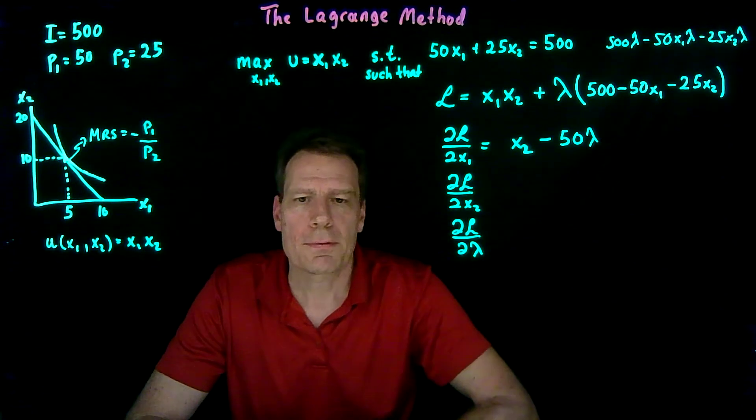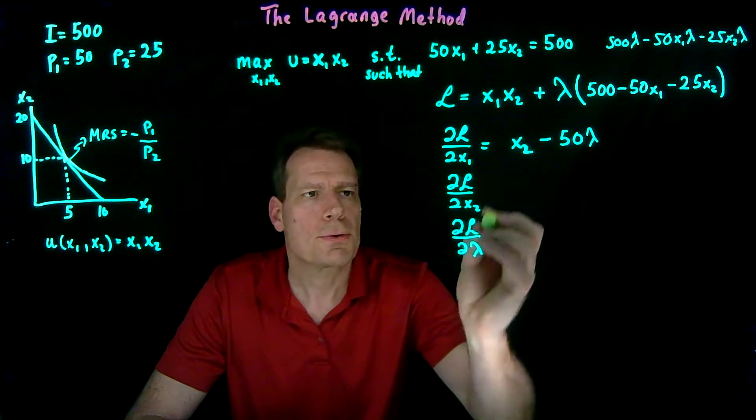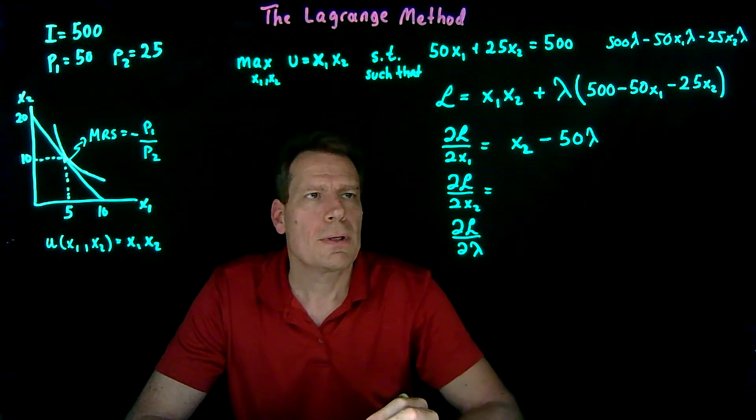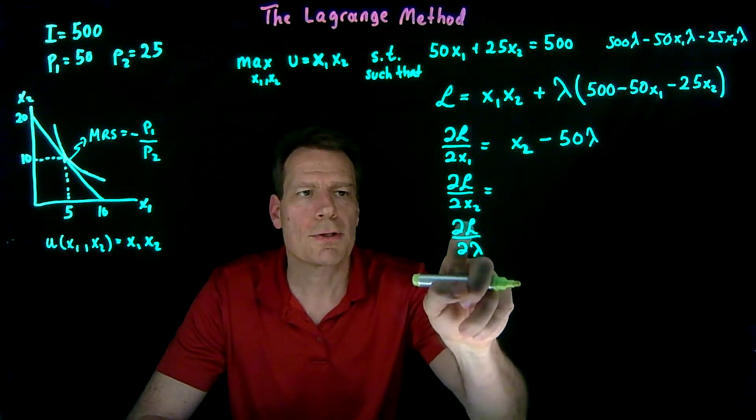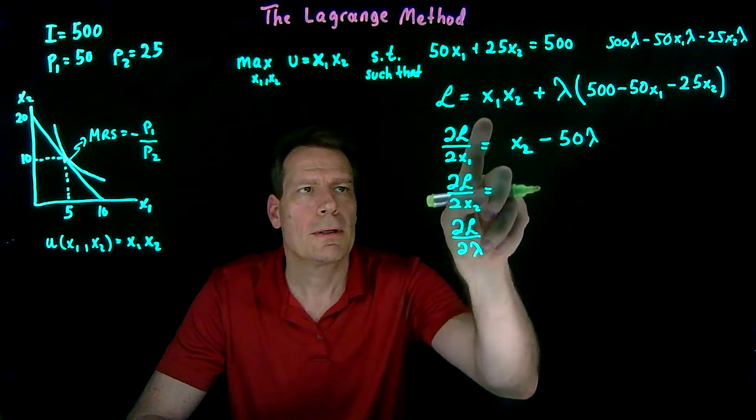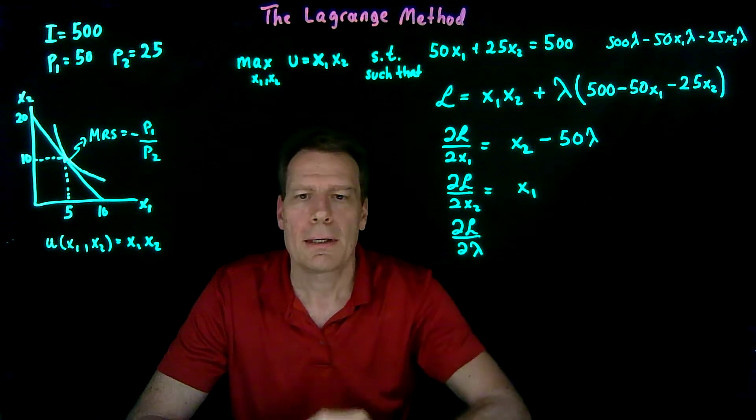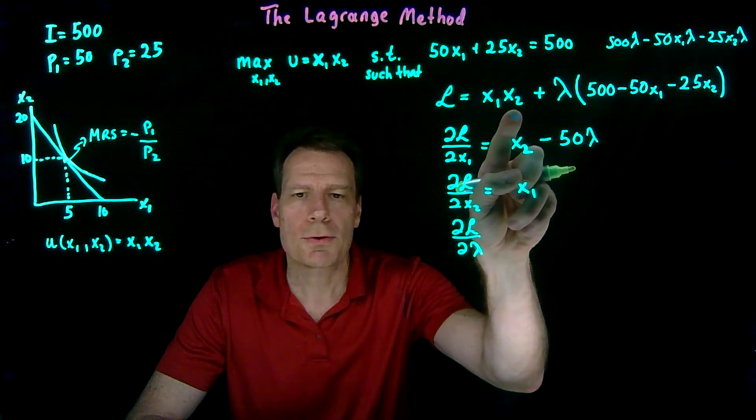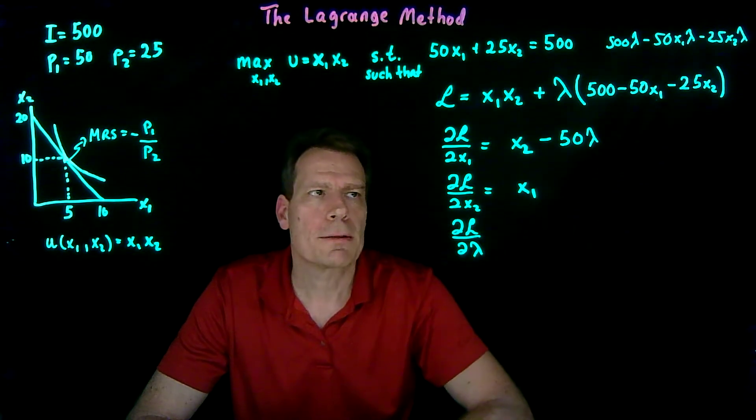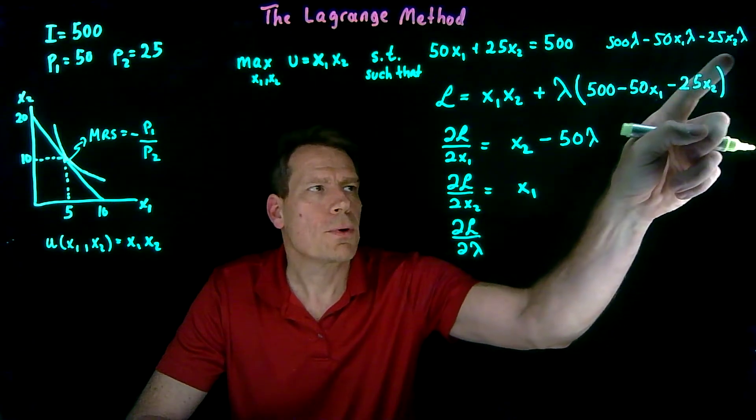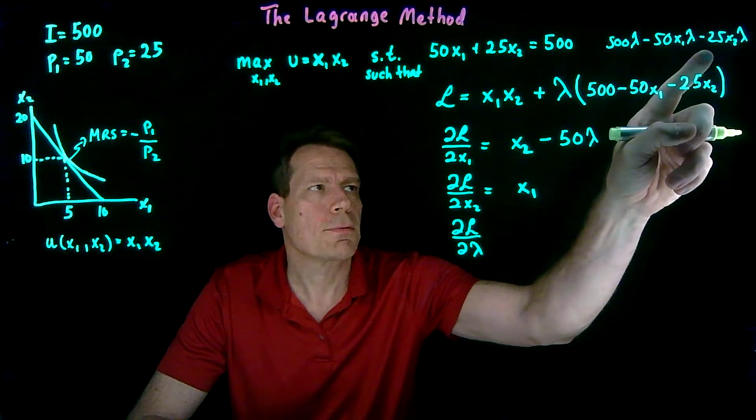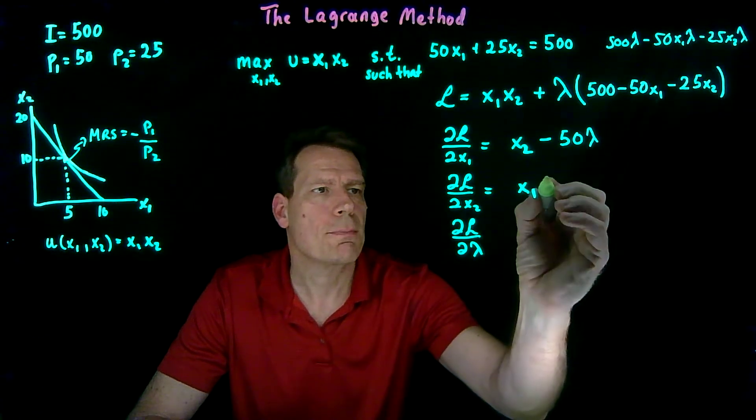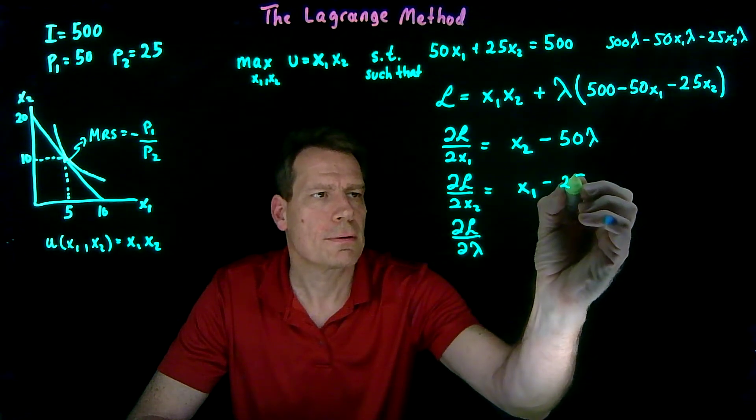If we take the partial derivative with respect to x2, we take the derivative of the first term. Since we're differentiating with respect to x2, we leave the x1 alone, and the derivative of x2 with respect to x2 is just equal to 1. Then we have to worry about this term, where there is an x2. The derivative of that with respect to x2 is just minus 25 lambda.